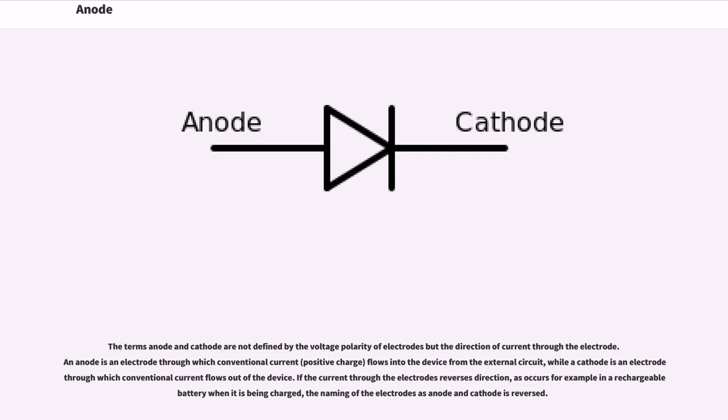The terms anode and cathode are not defined by the voltage polarity of electrodes but the direction of current through the electrode. An anode is an electrode through which conventional current (positive charge) flows into the device from the external circuit, while a cathode is an electrode through which conventional current flows out of the device. If the current through the electrodes reverses direction, as occurs for example in a rechargeable battery when it is being charged, the naming of the electrodes as anode and cathode is reversed.